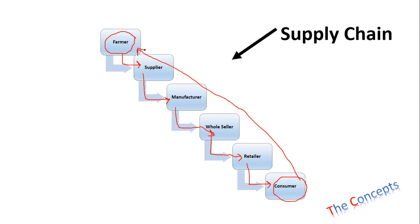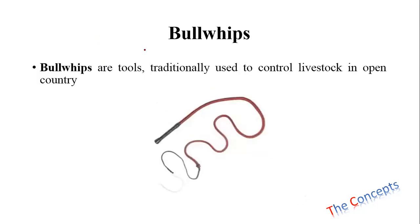Now we need to understand what is a bullwhip. Bullwhips are tools which were traditionally used to control livestock in open country. They are a kind of weapon or tool that farmers used to control their animals when they went out for grazing.